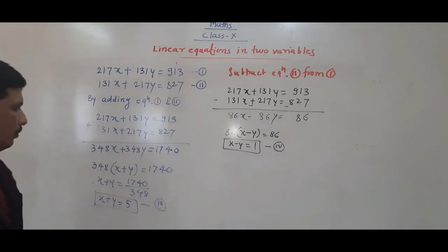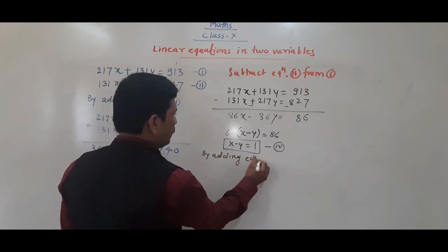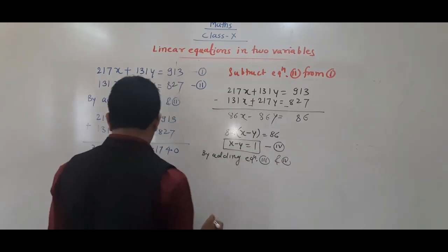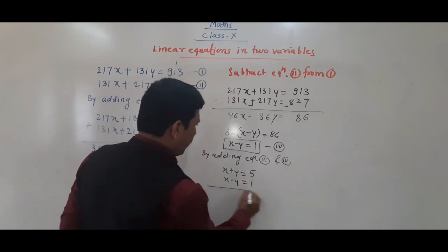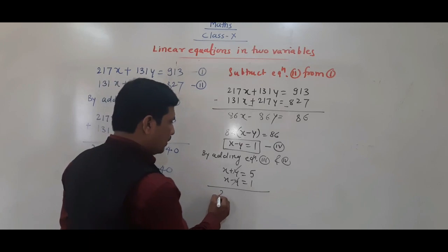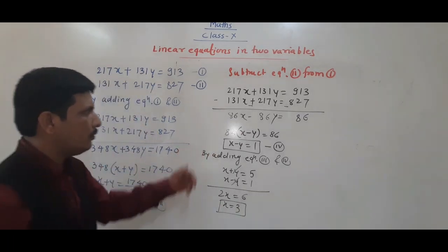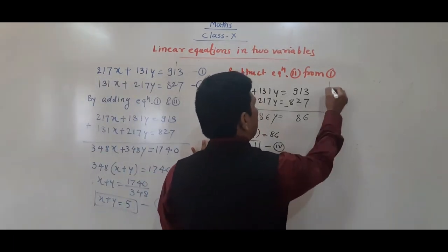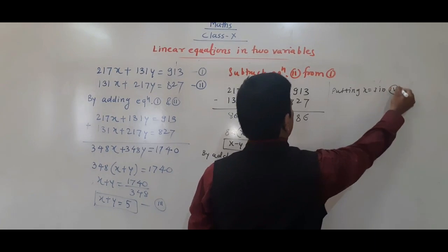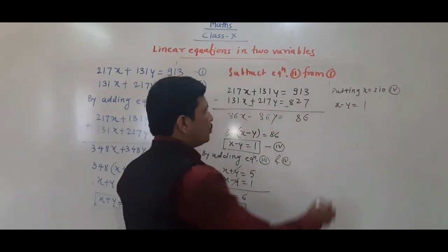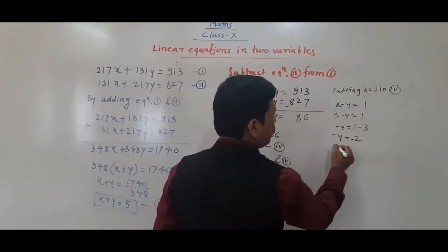Now by adding equation 3 and 4: x + y = 5 and x - y = 1. Adding them, +y and -y cancel, so 2x = 6, giving x = 3. Putting x = 3 in equation 4 (x - y = 1): 3 - y = 1, so -y = -2, therefore y = 2.